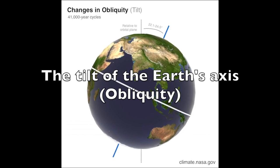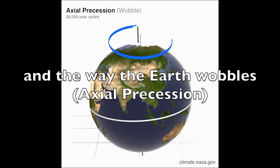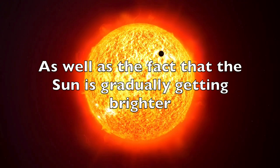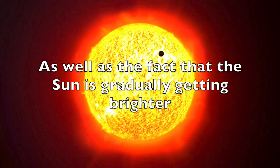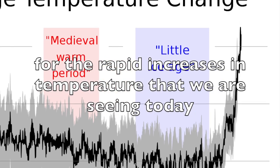The tilt of the Earth's axis, and the way the Earth wobbles about its axis, as well as the fact that the Sun is gradually getting brighter. But none of these are thought to be responsible for the rapid increases in temperature that we are seeing today.